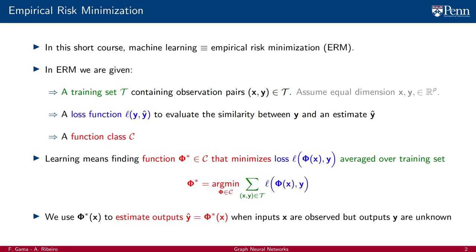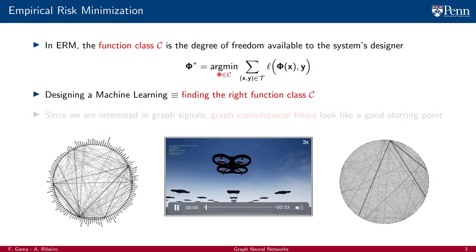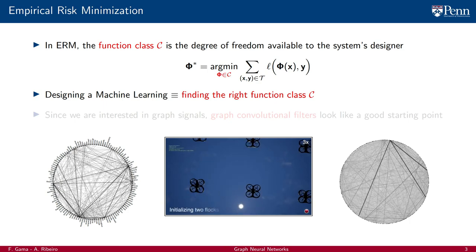When we say machine learning, we refer to this optimization problem. The process of finding the function phi-star in the class C is the process of training. Once we find phi-star of x, we can use it to estimate outputs y-hat when inputs x are observed but outputs y are unknown. In the empirical risk minimization problem, the training set and the loss function are given once the problem is given, which leaves only the function class C as a degree of freedom available to the systems designer. Thus, the problem of designing a machine learning method can be equated to the problem of finding the right function class C.